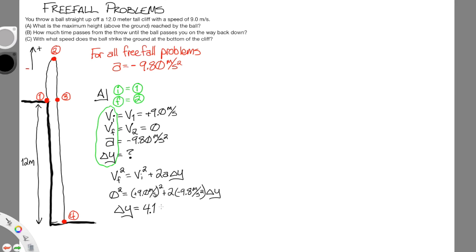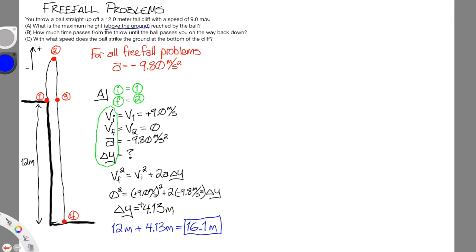We get 4.13 meters, and a positive value is expected because from snapshot 1 to snapshot 2 the ball has gone up. But that delta-y is only from snapshot 1 to snapshot 2, so we should check what the problem actually asks for. The problem asks for the height above the ground, so we take the height of the cliff — 12 meters — and add this extra height of 4.13 meters, giving a final answer of 16.1 meters above the ground for part A.